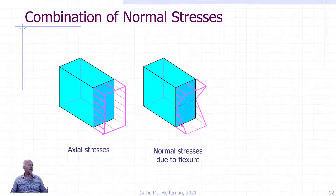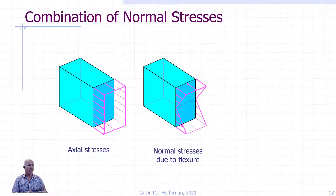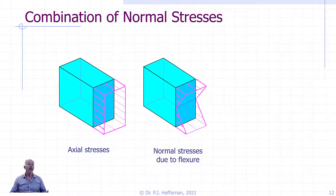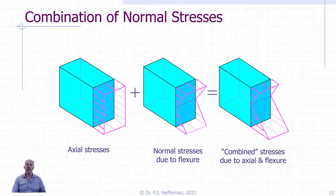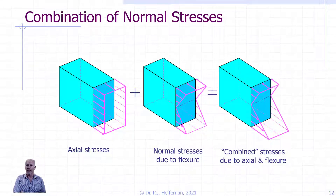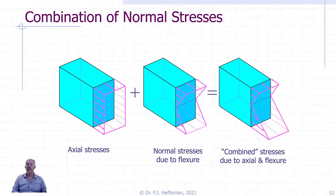So if our structure is being loaded with both axial stresses and bending, we would expect our stress distribution to be the sum of the component parts. Because these stresses are on the same face going in the same direction — positive or negative — they are additive, and so we change our stress distribution to the sum of the two. The tensile axial stress has taken away from the compressive normal stresses due to bending, and has added to and made worse the tensile stresses due to bending.